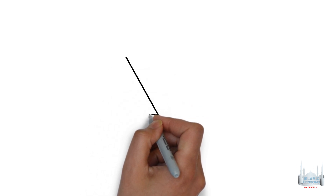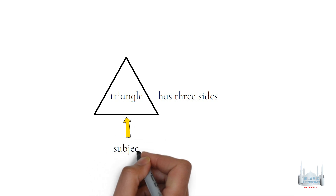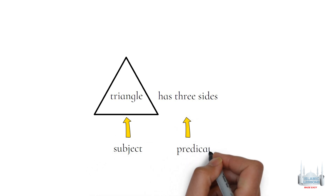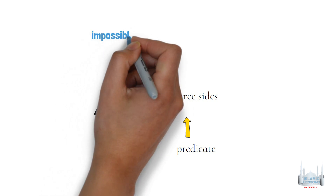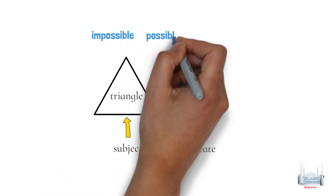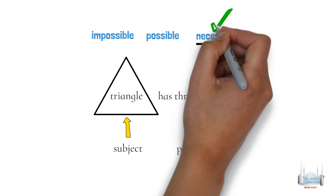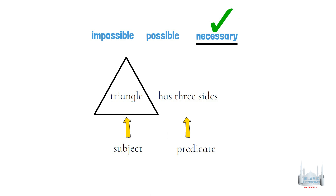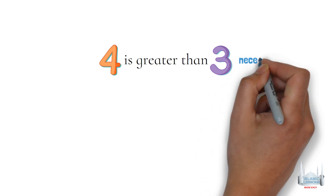Let's give some more examples. A triangle has three sides — the triangle is the subject and three sides is the predicate. It could only have three possibilities: is it impossible, is it possible, or is it necessary? Of course it is necessary for a triangle to have three sides — it must have three sides, otherwise it will not be called a triangle. Four is greater than three — is it possible, impossible, or necessary? It is necessary. It must be the case.